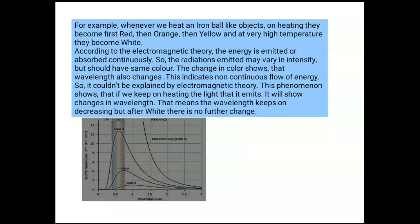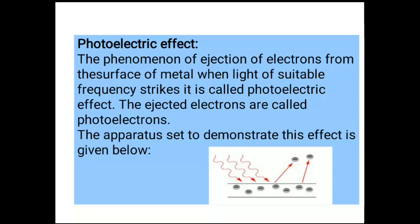Next is the photoelectric effect. Hertz in 1887 discovered that when a beam of light of certain frequency strikes a metal surface, electrons are knocked out. This phenomenon is called the photoelectric effect — the ejection of electrons from the surface of a metal when light of suitable frequency strikes on it. The electrons which are knocked out are called photoelectrons.